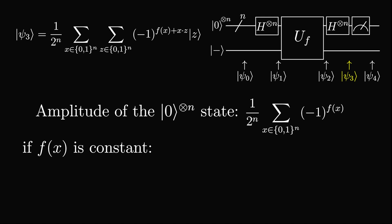Now let's consider two different scenarios. If f of x is constant, then for all x's, f of x will always be the same value. So the amplitude of the all zero state if f of x equals 0 is 1 over 2 to the power of n times the sum over all x's. Since there are 2 to the power of n possible combinations of x, the sum becomes 2 to the power of n, which cancels leaving us with 1. If f of x equals 1, we get negative 1. Combining these two, if the function is constant, then the amplitude of the all zero state is plus or minus 1, meaning the probability of measuring all zeros is 1.